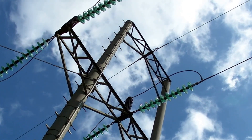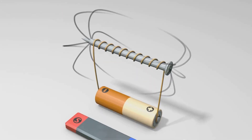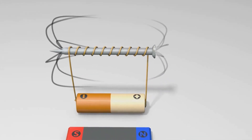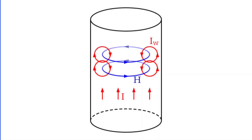What exactly causes this intriguing skin effect? It's all about the interaction of the magnetic field generated by the AC current with the conductor itself. When an AC current flows through a cylindrical conductor, it creates a magnetic field around and inside the conductor. This magnetic field changes in direction and magnitude according to the frequency and amplitude of the current. According to Faraday's law of electromagnetic induction, a changing magnetic field induces an electric field in a conductor, which then induces an opposing current known as an eddy current.